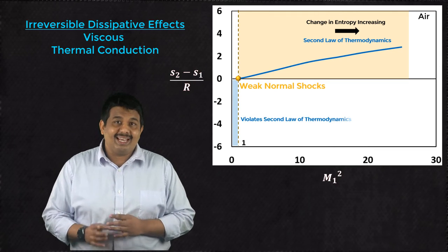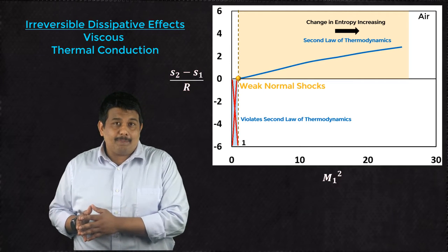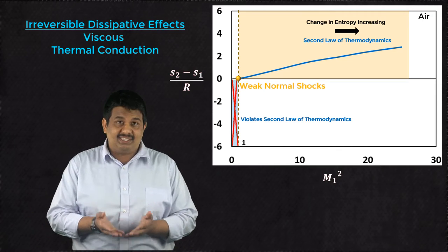When the value of M1 square is less than 1, the obtained downstream entropy violates the second law of thermodynamics and this condition is physically prohibited.